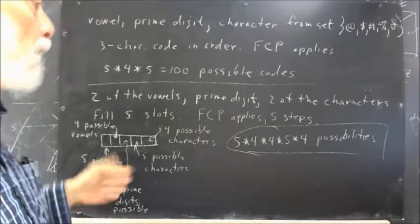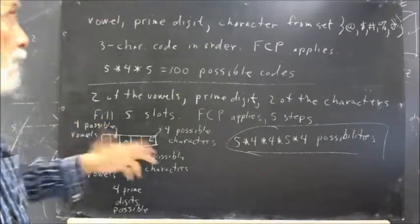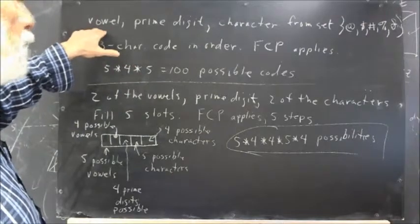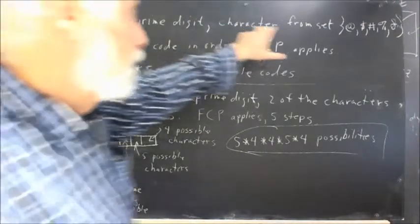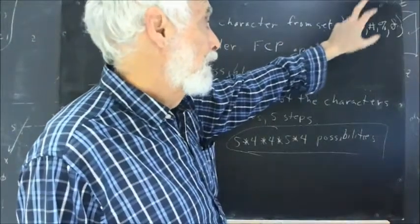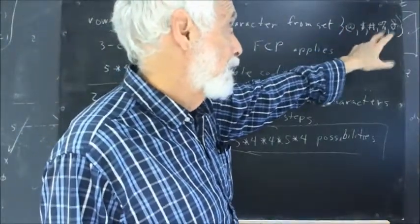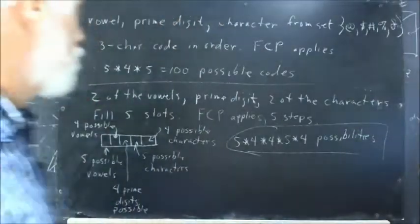This is a test-generating program. The first situation involves selecting a vowel from the alphabet, a prime digit, and a character from the set: hat sign, dollar sign, pound sign, percent sign, ampersand.